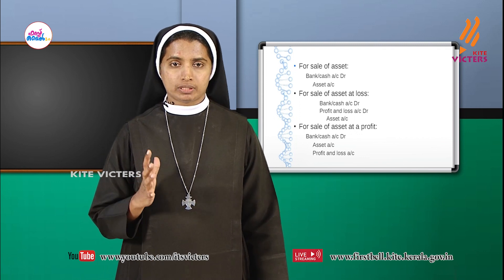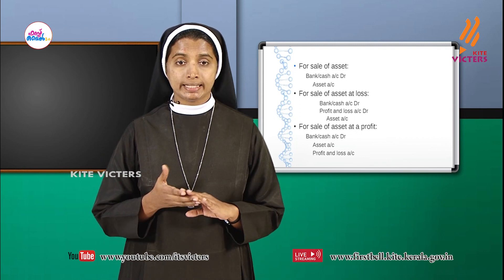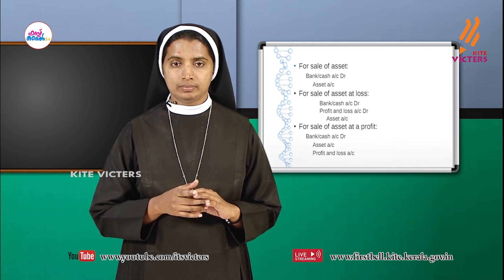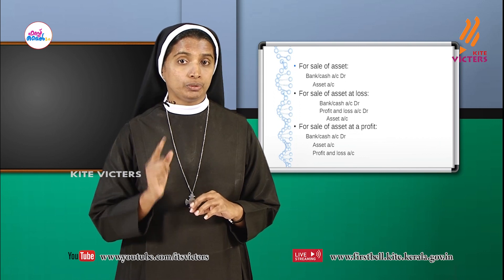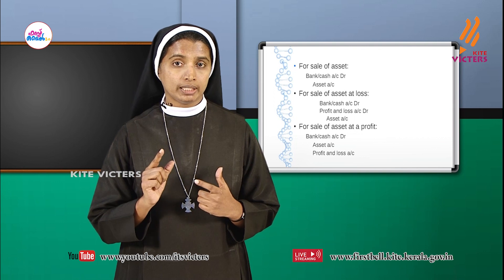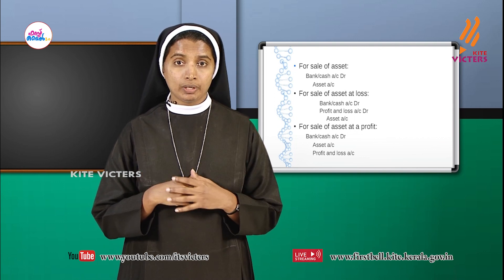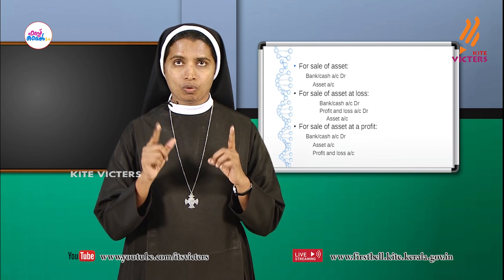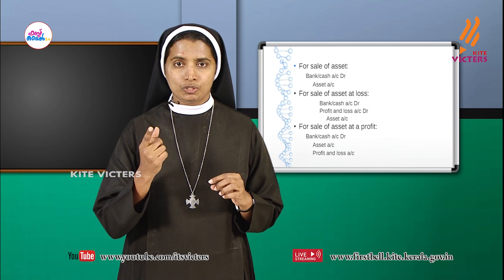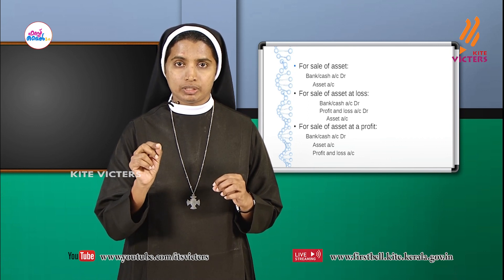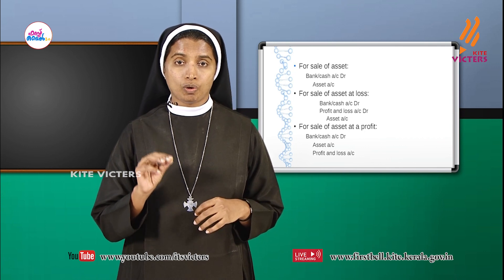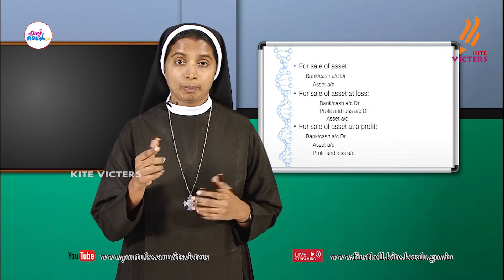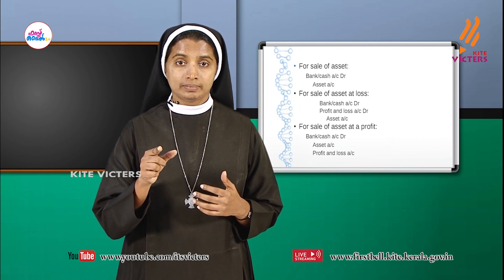For sale of asset at a loss: for example, if the book value is ₹10,000 but we receive only ₹8,000, there is a loss of ₹2,000. We received ₹8,000 as cash or cheque, so bank or cash is debited for ₹8,000. The loss of ₹2,000 is debited to profit and loss account.